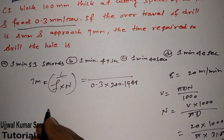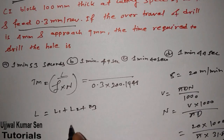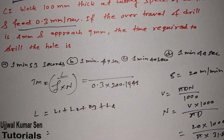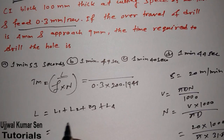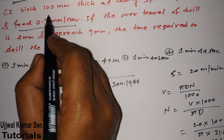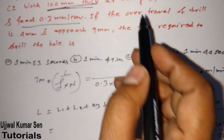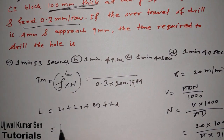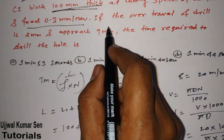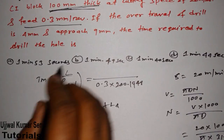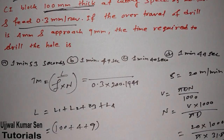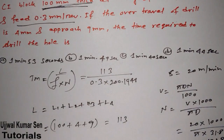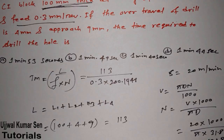Now finding L: the block thickness is 100 mm, so L1 = 100. The over-travel of the drill is 4 mm and the approach length is 9 mm, giving a total L = 100 + 9 + 4 = 113 mm.